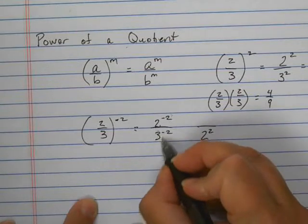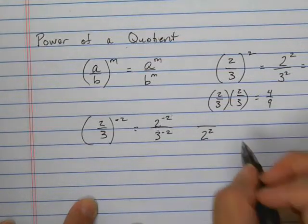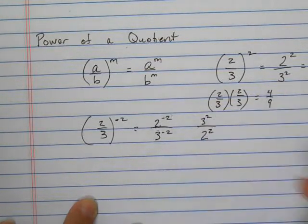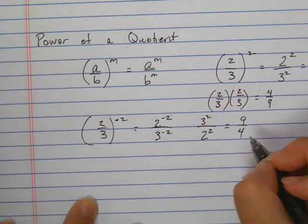And since this is a negative exponent to the base, it will take it to the numerator. So we end up with 9 fourths.